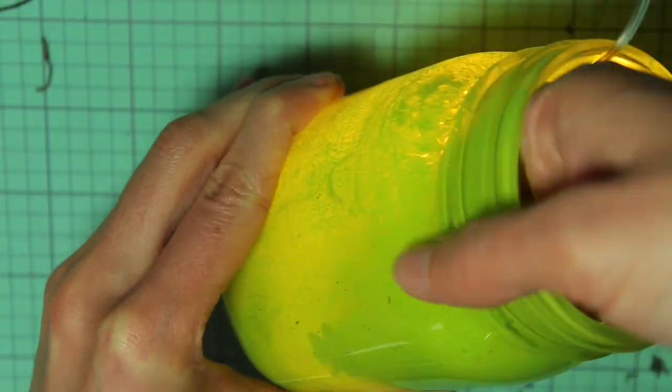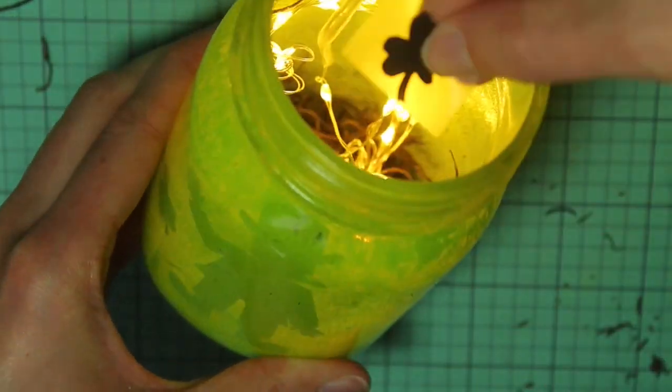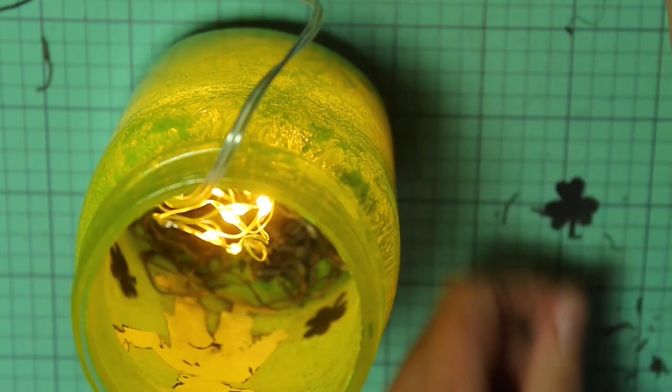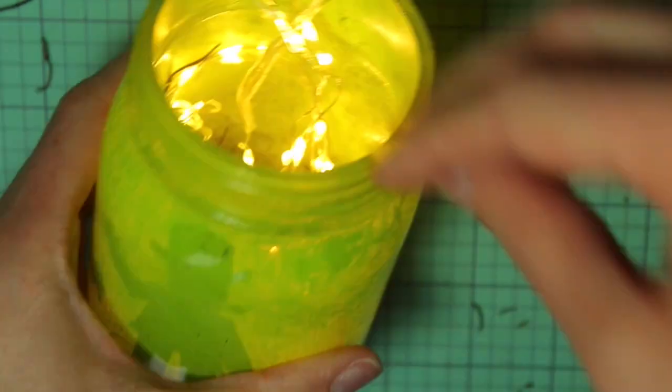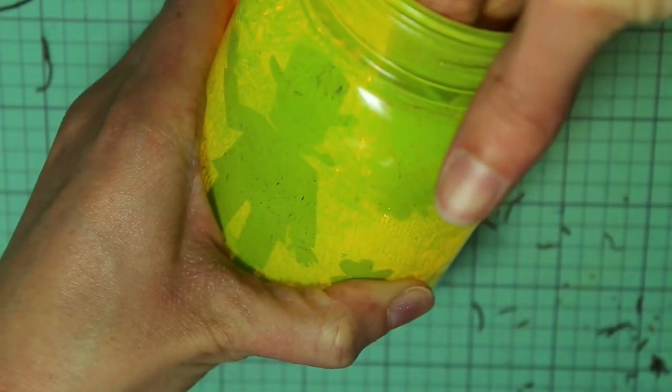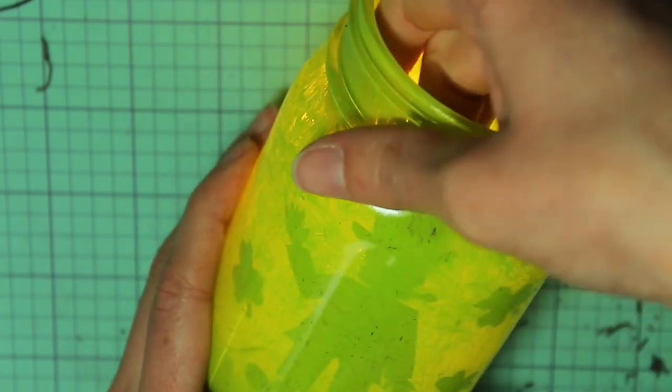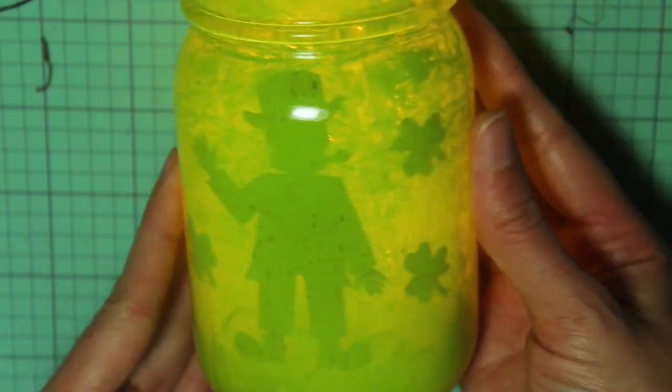So I ended up putting one shamrock on the side where his arm is lifted up and two on the other side. So it looks like this.